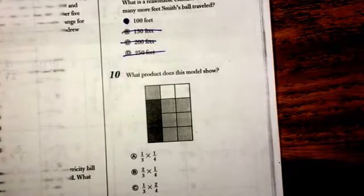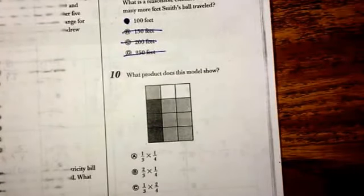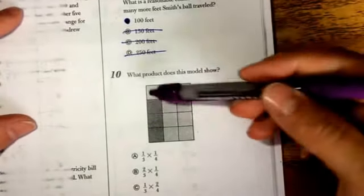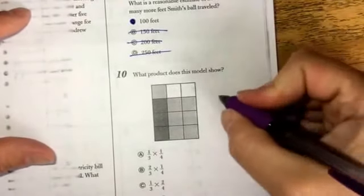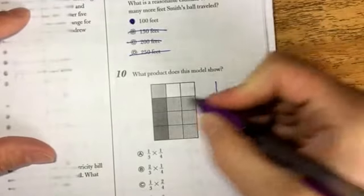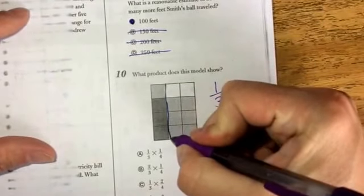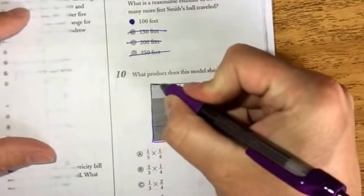And then what product does this model show? So, well, we need to take a look here, and I can see that I have 1 out of 1, 2, 3 columns filled in. So that's going to be 1 third because I have 1 out of 3 columns filled in there.